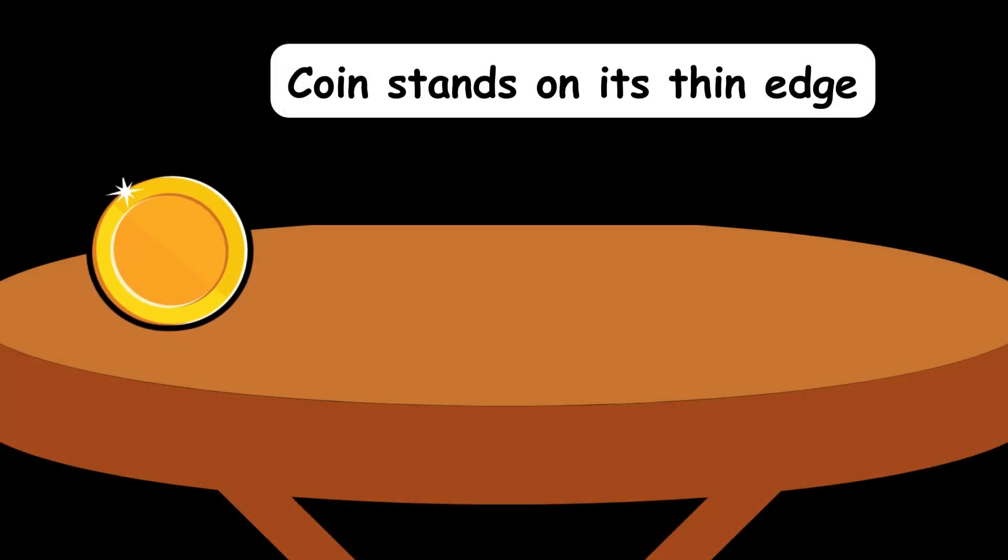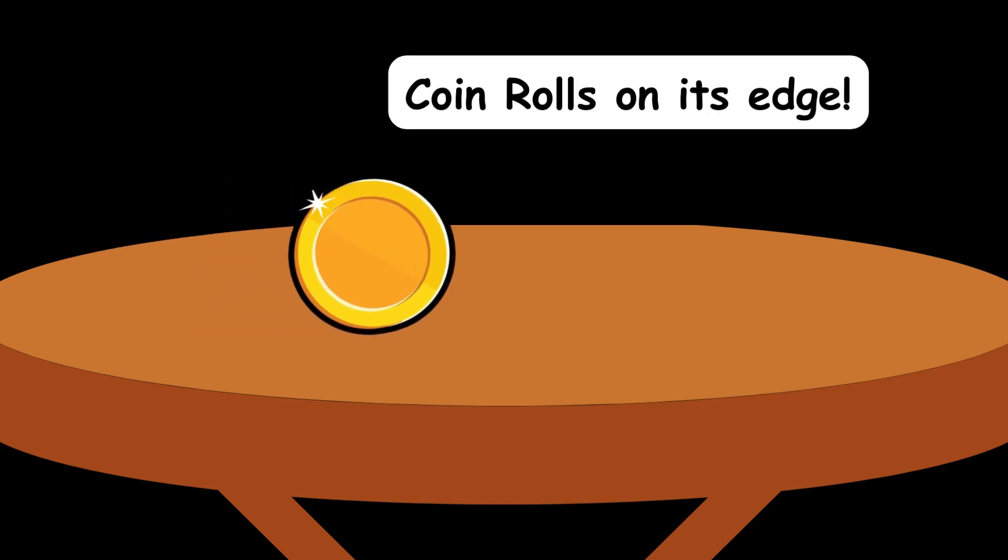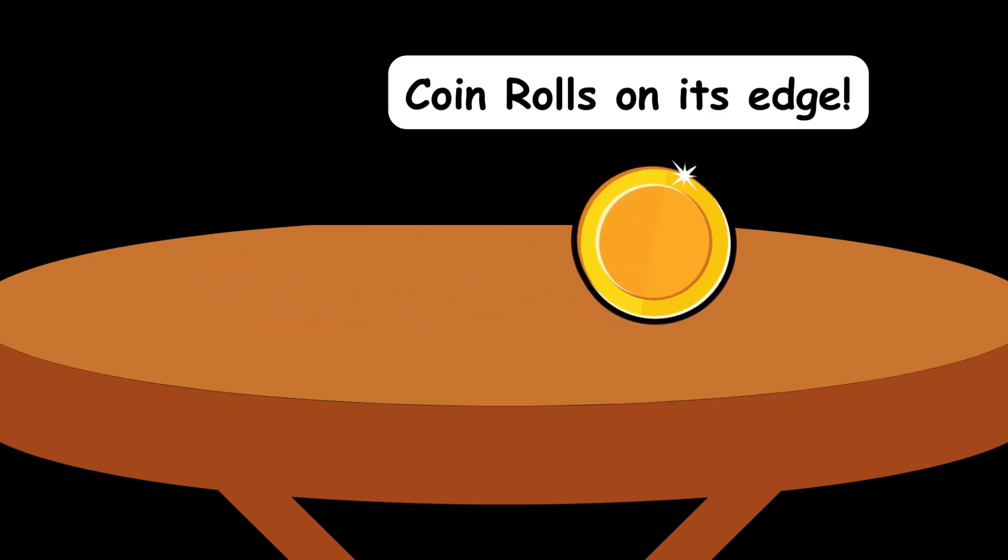Then she took her shiny coin and placed it gently on its thin edge and then pushed it gently. It rolled like a tiny wheel. The coin's edge is round and hence it rolled too.